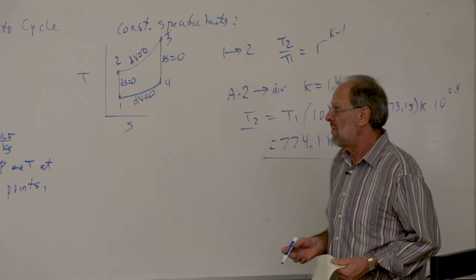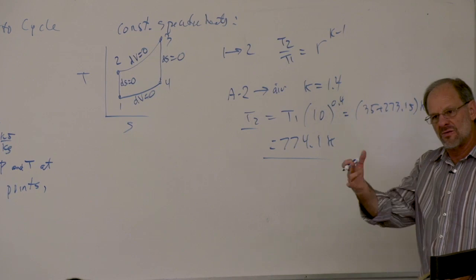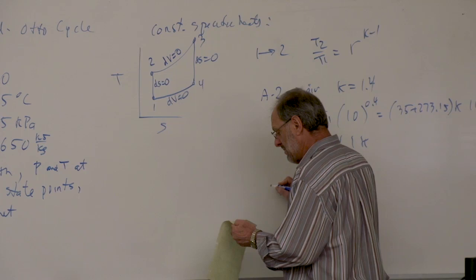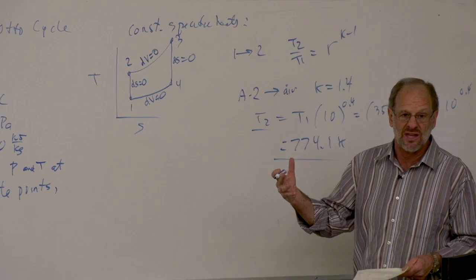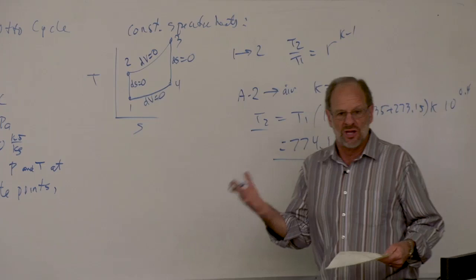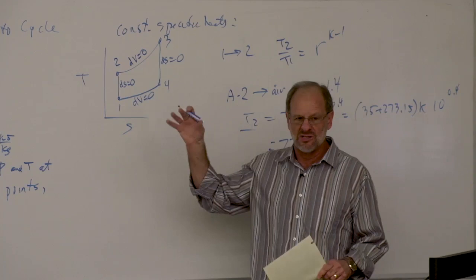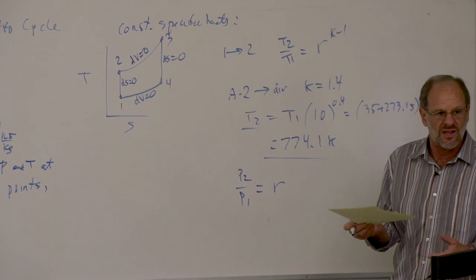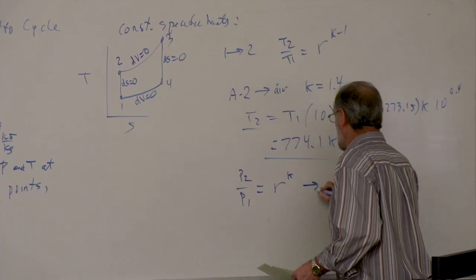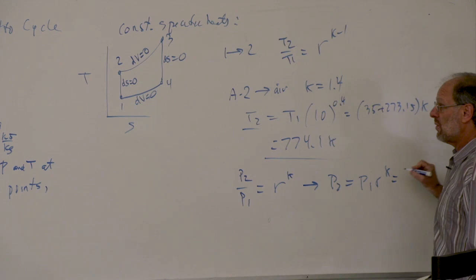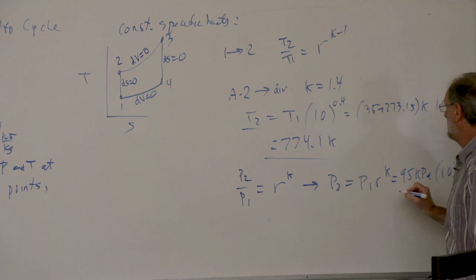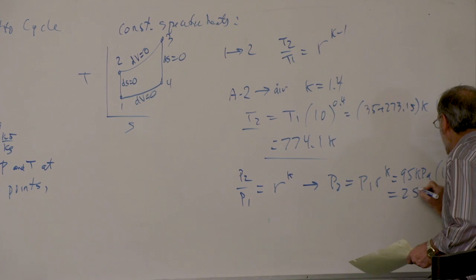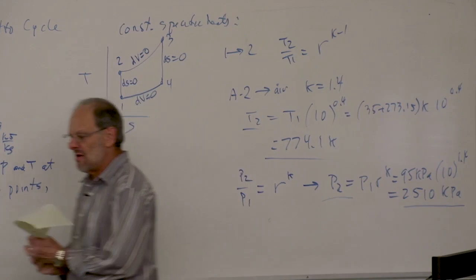For the pressure at state 2, using the isentropic relation P2/P1 equals (V1/V2)^K, which is the compression ratio to the K power. So P2 equals 95 kPa times 10^1.4, giving 2510 kPa.